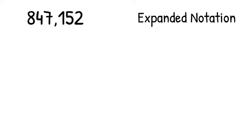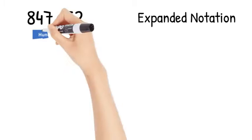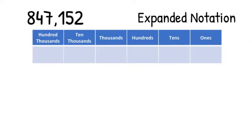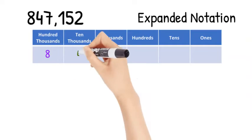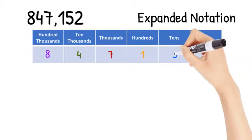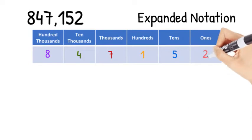We are first going to write this number in expanded notation. I will place our number in a place value chart to make this easier. There are 8 hundred thousands, 4 ten thousands, 7 thousands, 1 hundred, 5 tens, and 2 ones.